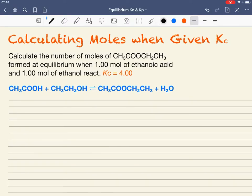In this example, we're going to work out the number of moles of an ester, ethyl ethanoate, at equilibrium, given the starting number of moles of the acid and the alcohol and the value for Kc.